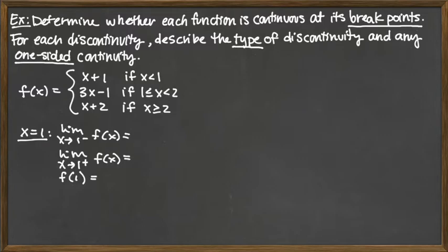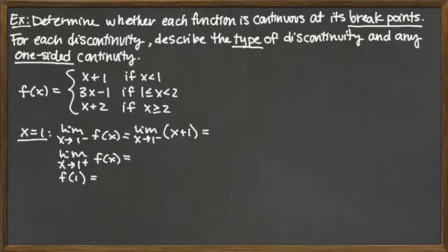The left-hand limit assesses values of x slightly less than 1, which falls in the top piece, since that interval includes x less than 1. We plug in to find that limit — think of it as finding the y-value for the endpoint, as if graphing. You plug into y equals x plus 1 to get the y-value. So the left-hand limit equals 2.